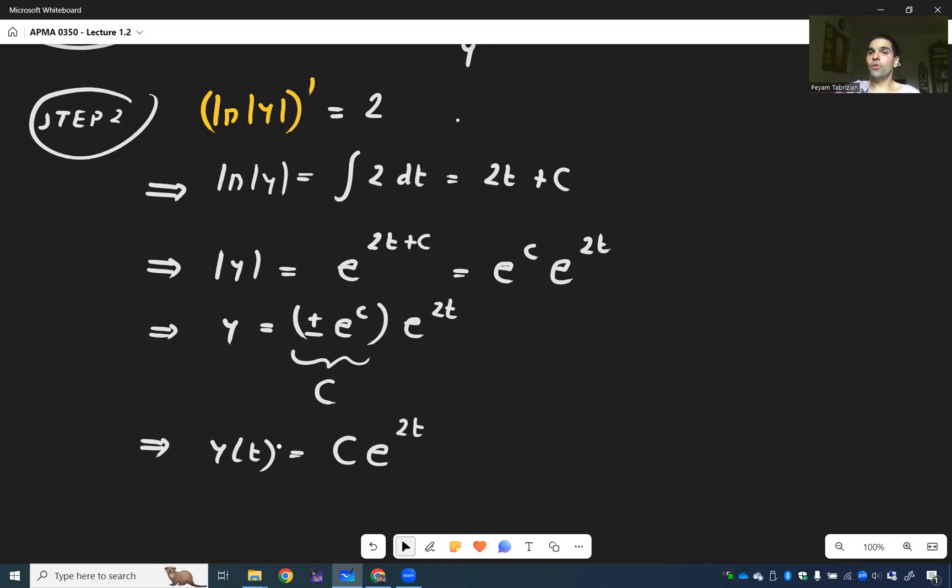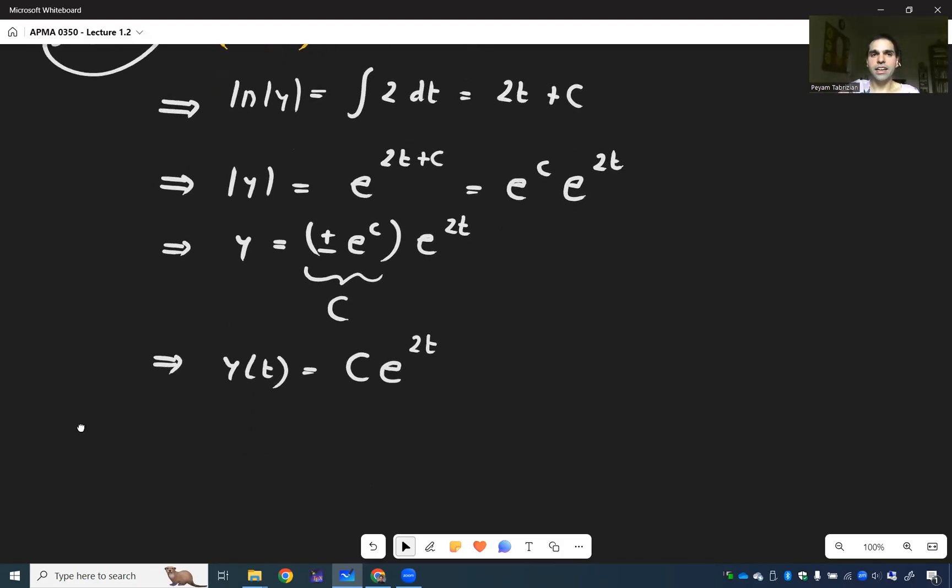We're almost done. Well, we still need to solve for c using the initial condition. So, this is very typical in ODE. Usually, you have what's called the general solution, where there's a constant, and then you use the initial condition to solve for it.